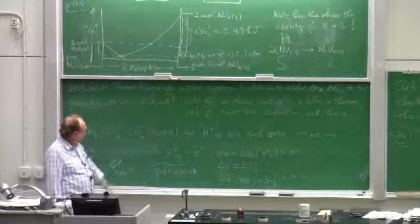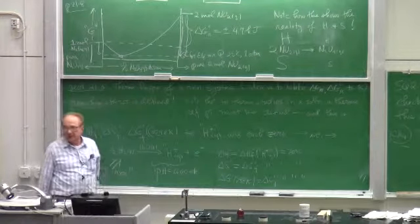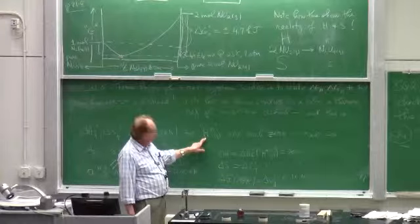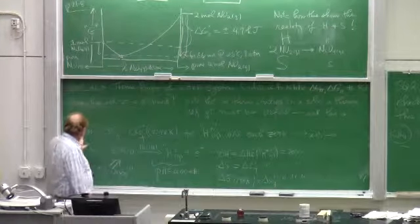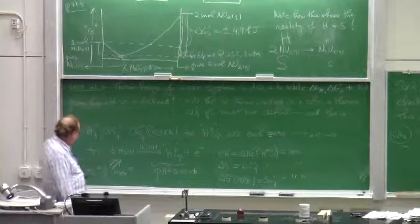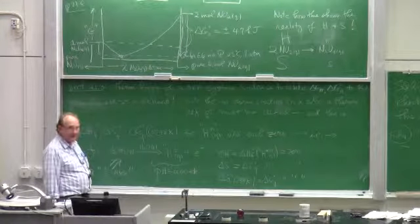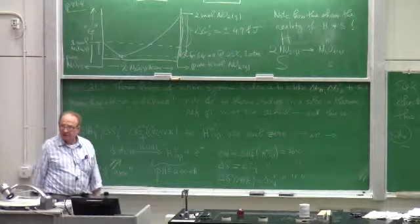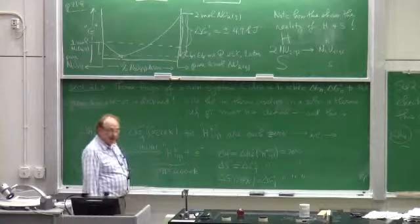So we've got to make a thermodynamic reference point so we can do thermodynamic studies on solutions. And here is the reference point. A solution at a pH of exactly 0.0000 forever. Which corresponds to H plus AQ. Whatever H plus AQ is. Forming this solution at a pH of 0.0000, delta H sub F super zero, delta S sub F super zero, delta G sub F super zero, 298K are defined as zero. Now we've got a reference point. So what does this correspond to? Or this, or this. It corresponds to this reaction. Which is a half reaction.